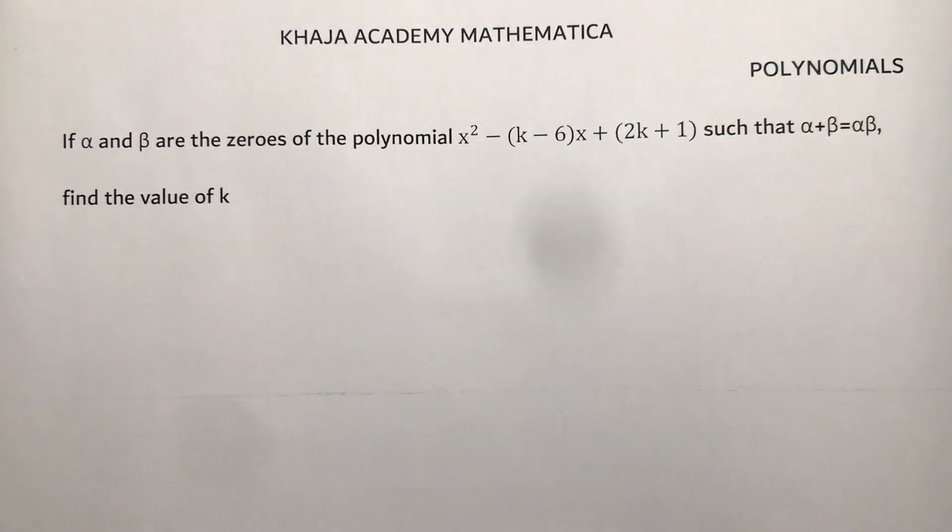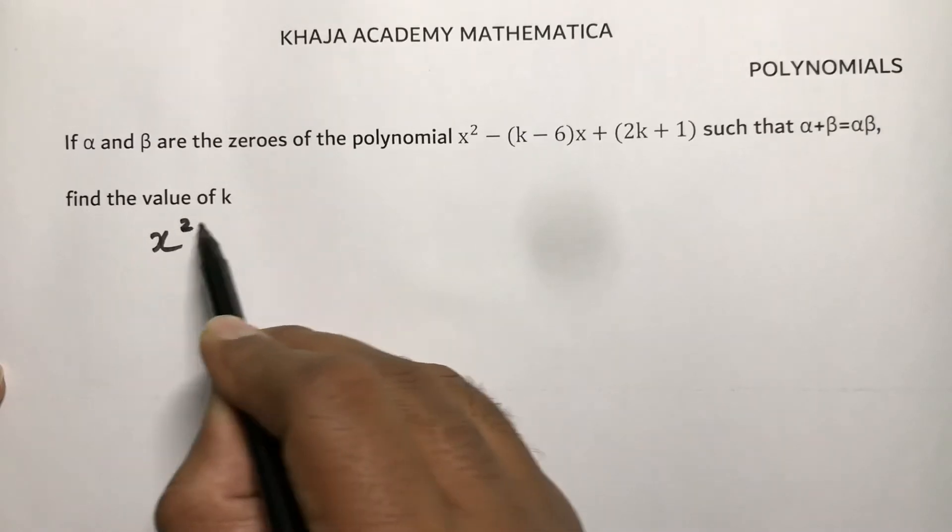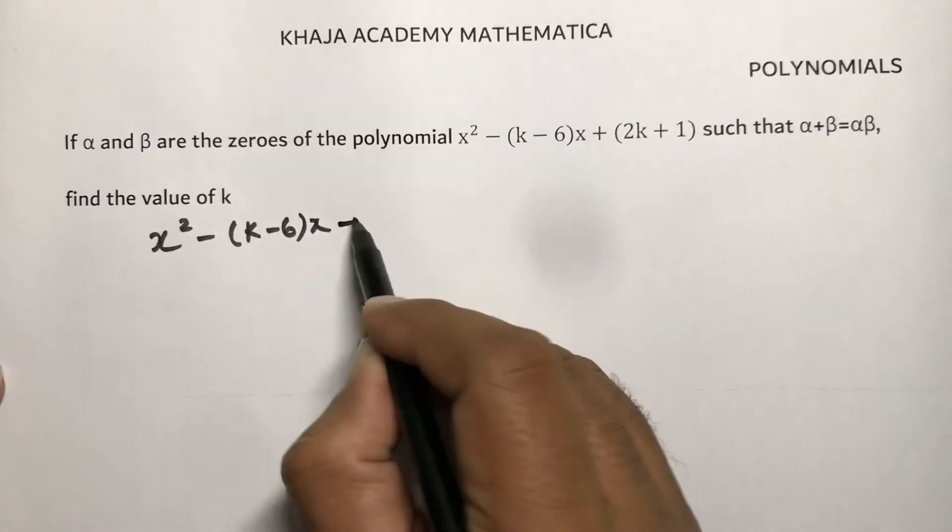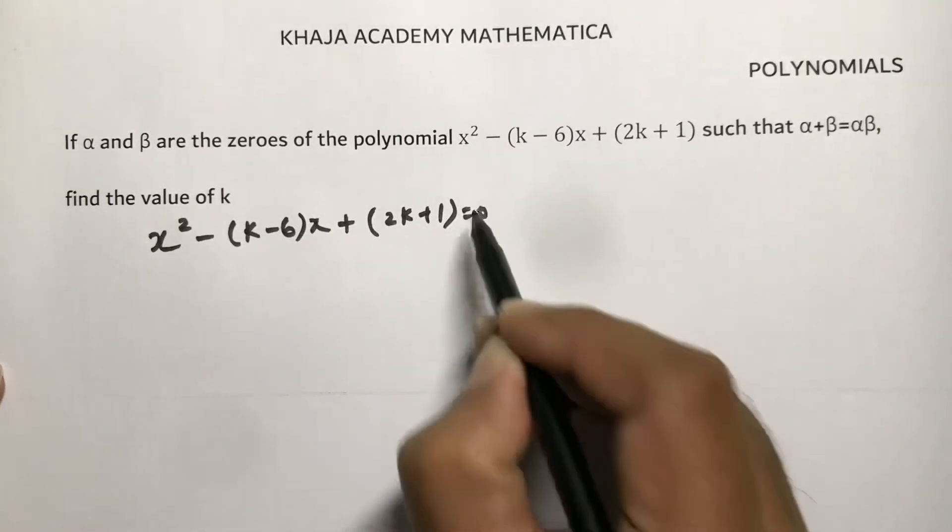If alpha and beta are the zeros of the polynomial x² minus (k minus 6)x plus (2k plus 1) such that sum of the zeros equals product of the zeros, we need to find the value of k. So the quadratic equation is x² minus (k minus 6)x plus (2k plus 1) equals 0.